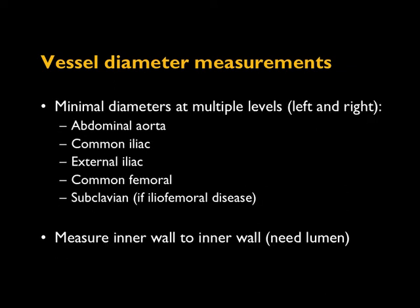Measurements are obtained at multiple vessel levels: the minimum diameter at the abdominal aortic level, the iliac artery level (both common and external), and the femoral artery level. If the vessel is too small, the device won't be placed there due to the risk of vessel rupture.